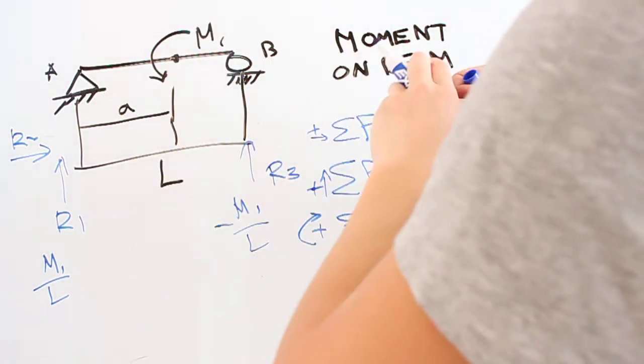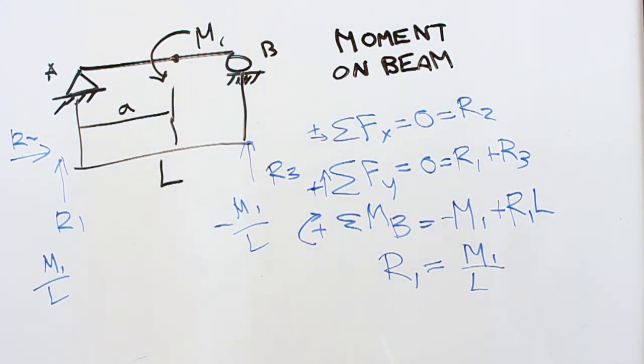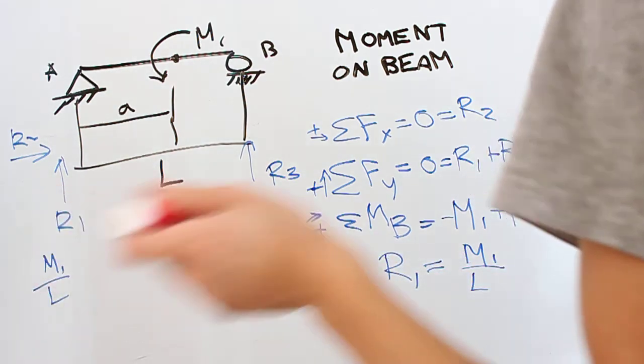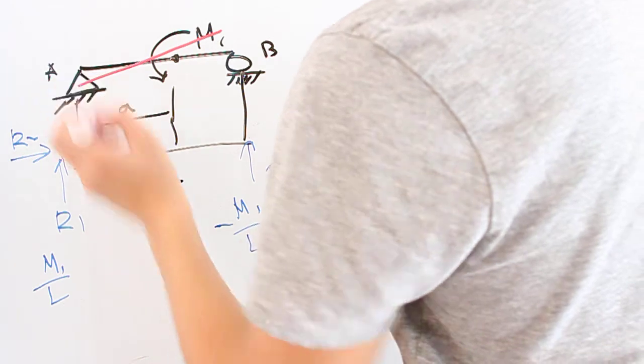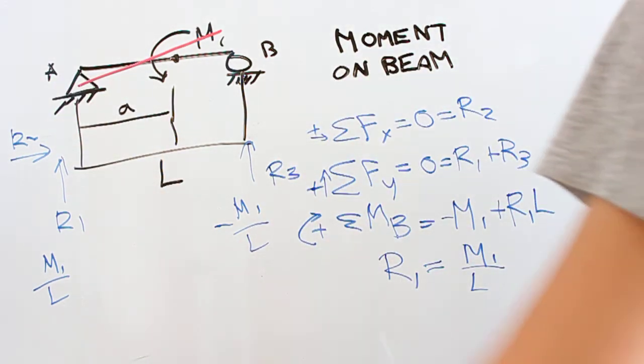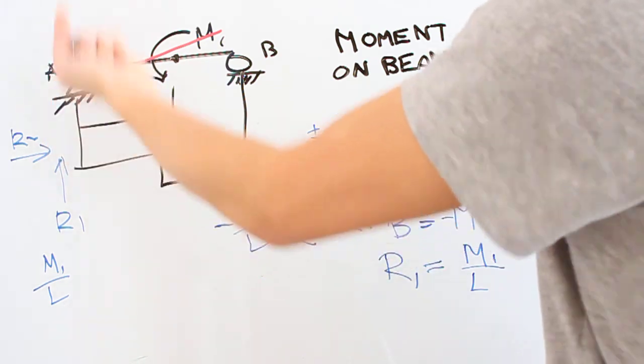If we're trying to rotate this beam in this sense, you can usually, just for purposes of understanding the problem, visualize what would happen if there weren't connections. Well, this beam would start to look like this, right? And in that case, we're pushing down on this beam, so the ground is going to push back up on this connection.